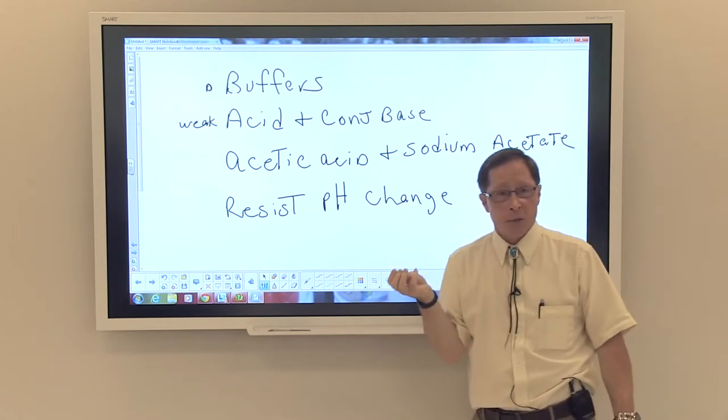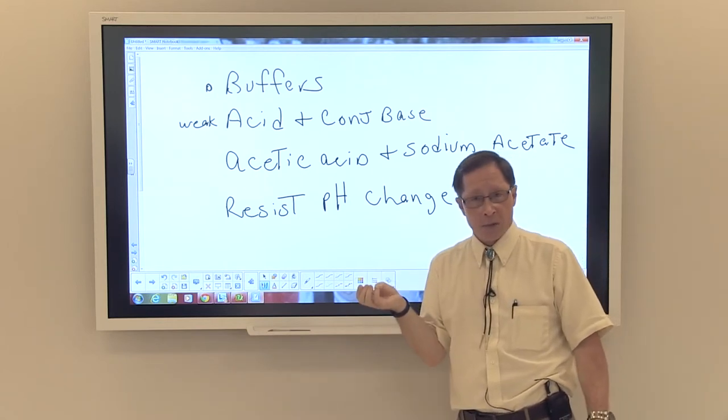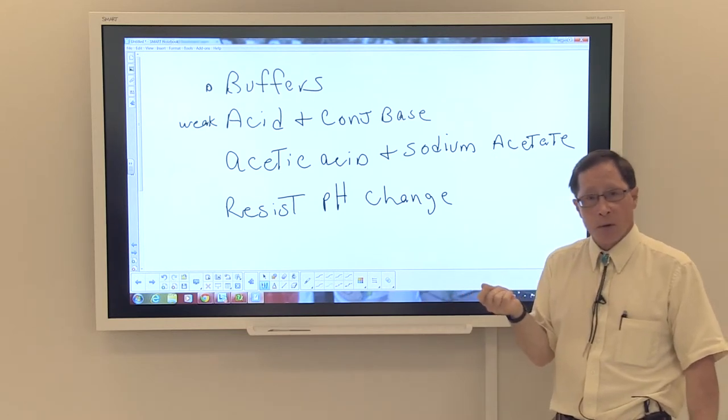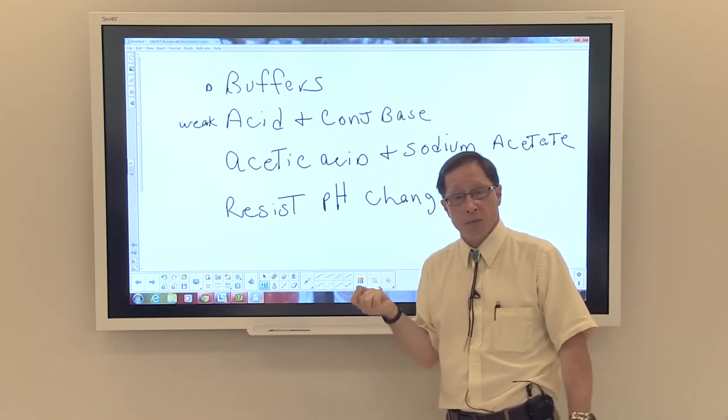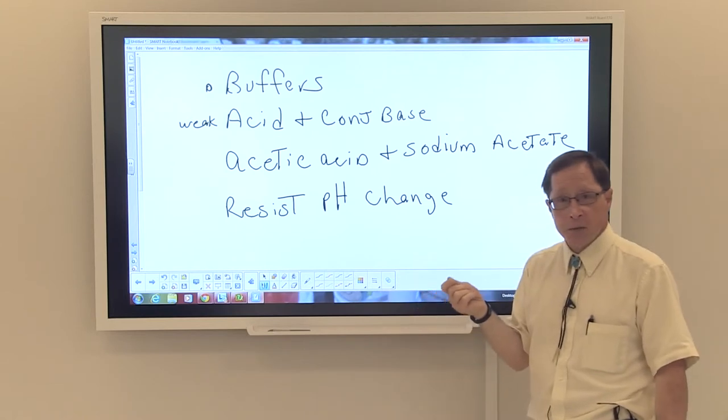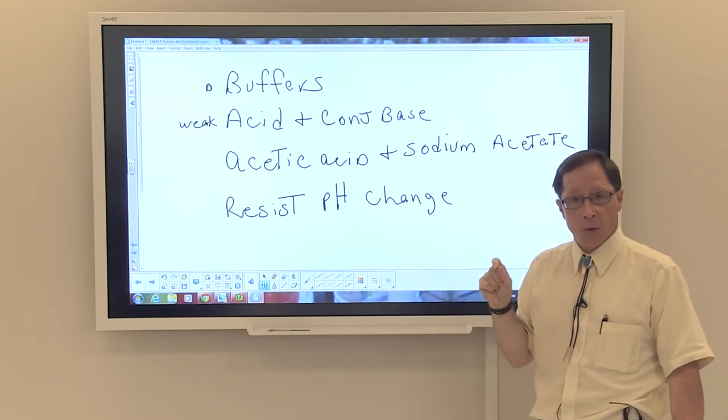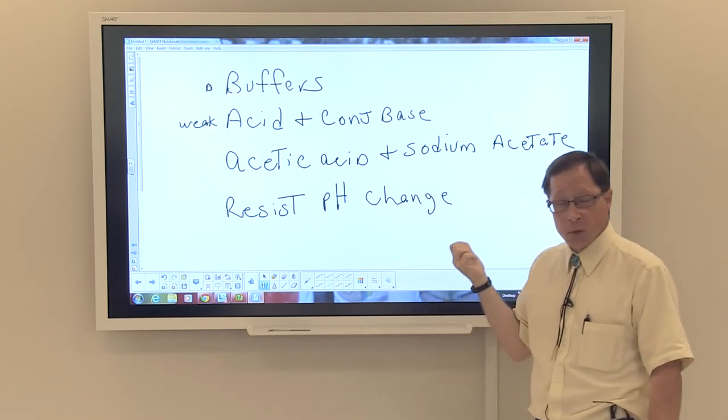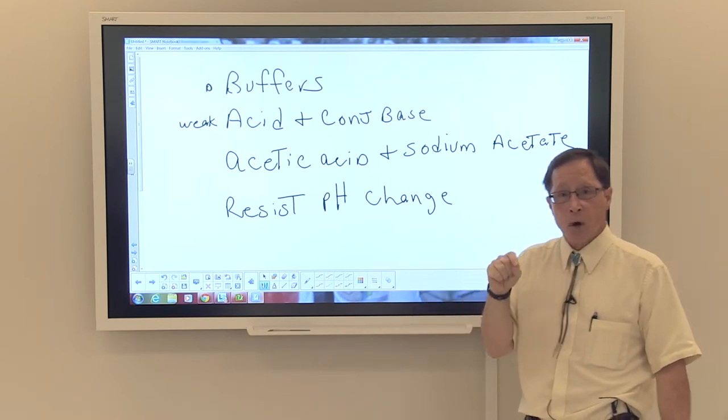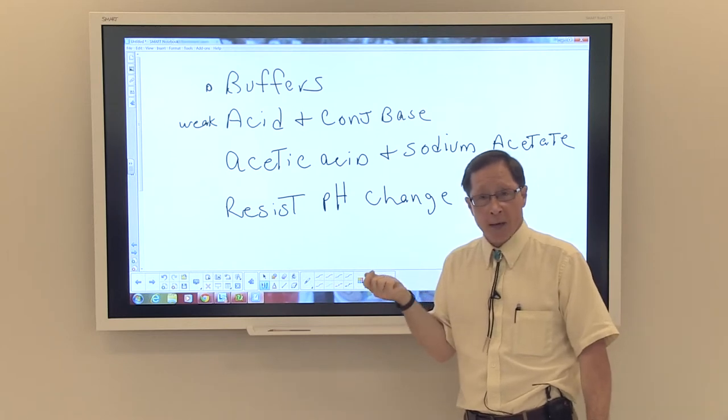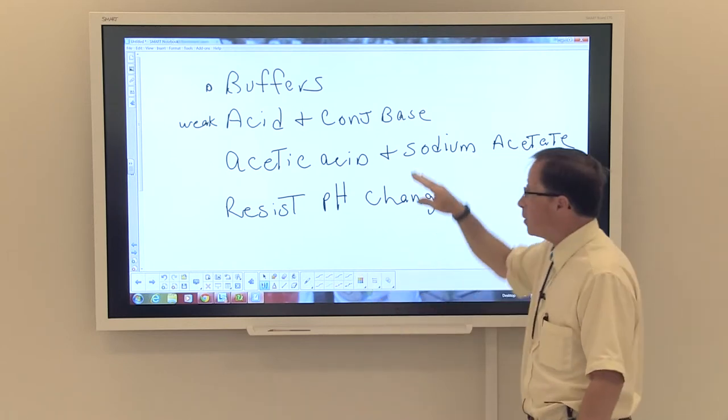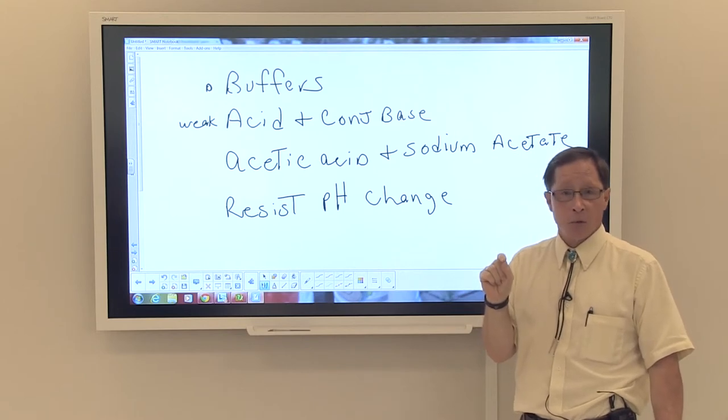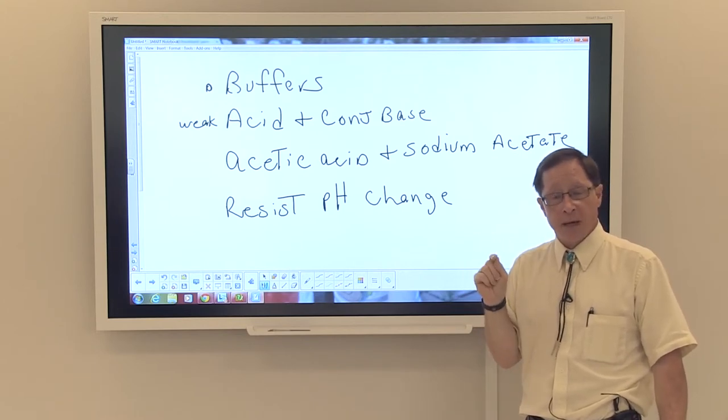Let me give you an example of how resistant they are. If you had a beaker of distilled water, let's say you had 150 milliliters of water and you had a pH meter attached to it, the pH of that water we would hope would be somewhere near 7, which is neutral. If I put a drop of concentrated hydrochloric acid into that beaker, the pH would drop from 7 to probably 2 or 3 with one drop of acid.